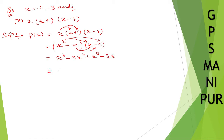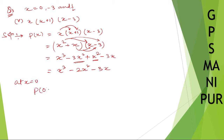So we get x cube, minus 3x square, plus x square — which gives minus 2x square, minus 3x. Now, at x equal to 0, P of 0: instead of x, put 0. So: 0 cube, minus 2 into 0 square, minus 3 into 0.